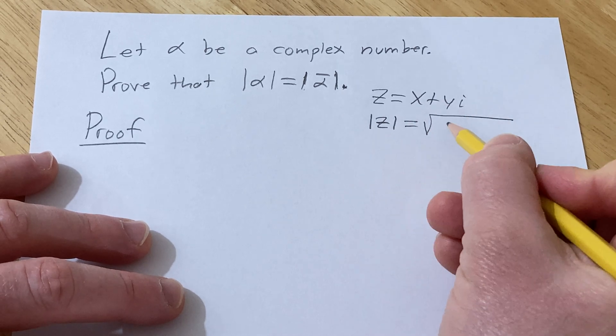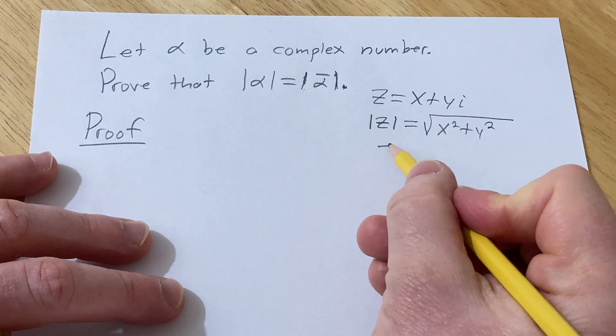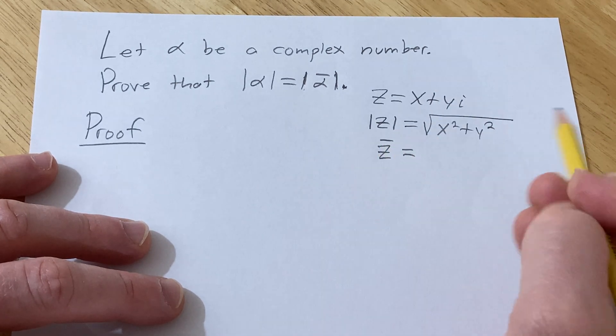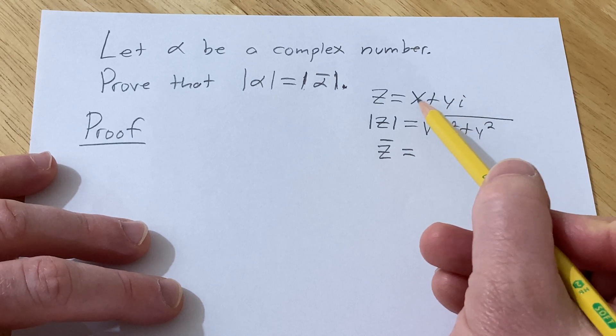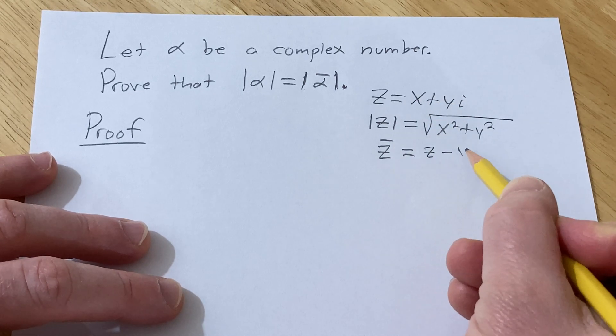The conjugate of z is the complex number you get by switching the sign between x and y. So this is z minus yi.